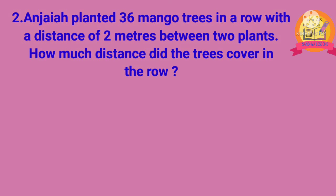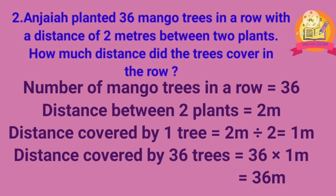Second problem: Anjaya planted 36 mango trees in a row with a distance of 2 m between 2 plants. How much distance did the trees cover in the row? Solution: number of mango trees in a row is 36. Distance between 2 plants is 2 m. Distance covered by 1 tree is obtained by dividing 2 m by 2, which gives 1 m. Distance covered by 36 trees is 1 m multiplied by 36, which equals 36 m.